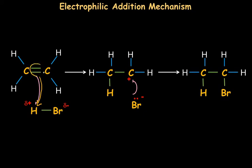The electron density is negatively charged, so we draw an arrow from the electron-negative part to the partial positive hydrogen atom. In the second step, we draw the arrow from the negatively charged bromine atom to the positively charged carbon atom. The arrow always points from negative to positively charged species. In this way, carbon-carbon double bond gets added with hydrogen bromide — hydrogen and bromine atoms are added to the double bond.